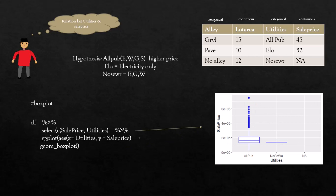ELO means electricity only. When you run this command to test the hypothesis, the resulting box plot confirms that the hypothesis is correct — so you can analyze the dataset like this using ggplot2.